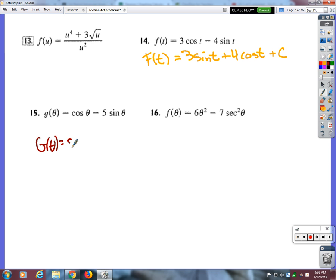What's the anti-derivative then of cosine? Sine theta, that's right. So I'm going to make that just plus five instead of going negative cosine. Okay, and then yeah, sorry plus c, forgot that.